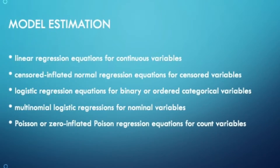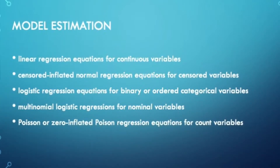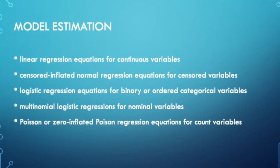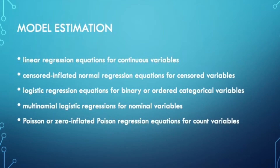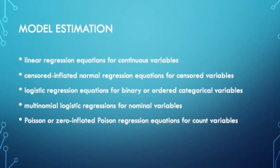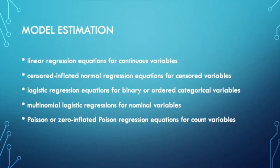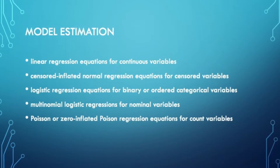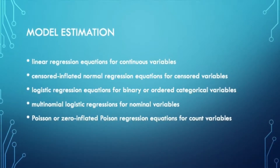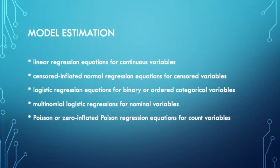Based on the type of variables used as latent class observed indicators, relationships are estimated using linear regression equations for continuous variables, censored-inflated normal regression equations for censored variables, logistic regression equations for binary or ordered categorical variables, multinomial logistic regressions for nominal variables, or Poisson or zero-inflated Poisson regression equations for count variables.